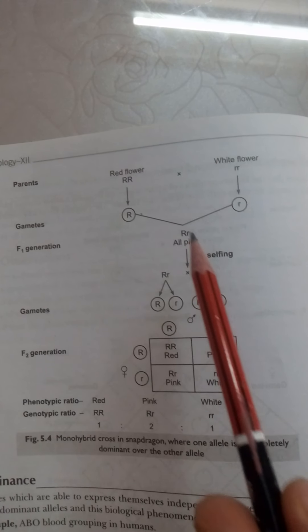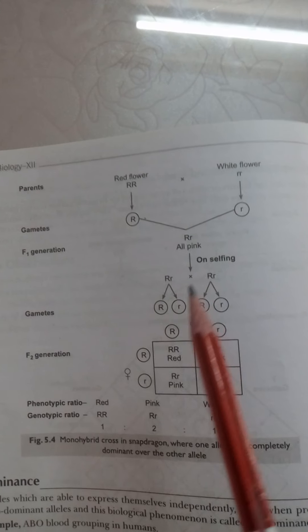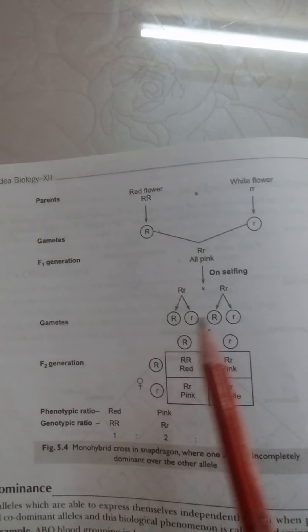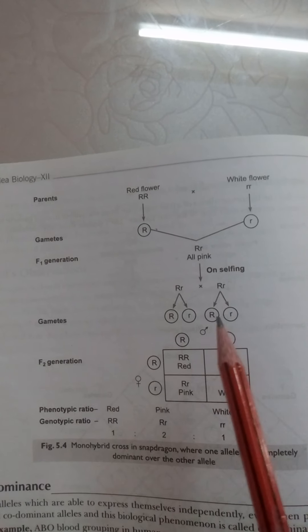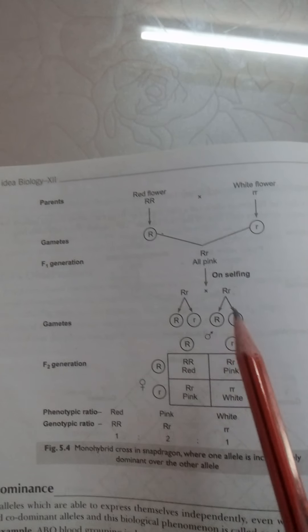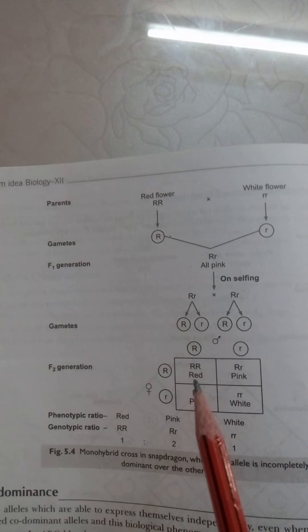When selfing is carried out in F1 generation, two types of gametes are produced, capital R bearing and small r bearing in all plants. After selfing in F2 generation, what do we obtain?